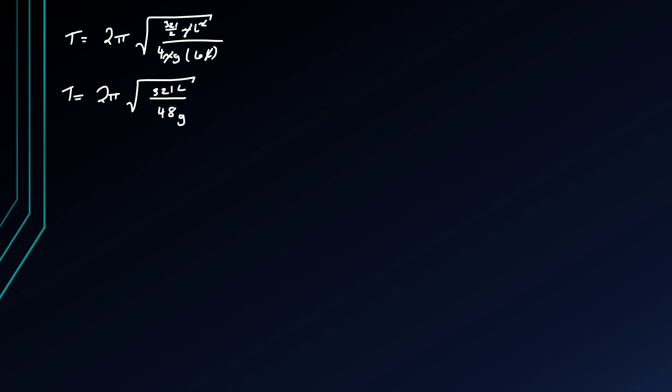Which we can, I think 321 is divisible by 3 it seems. Yep, and so that means that T is 2 pi root 107l over 16g seconds. So we finally found the answer to part one, let's find the answer to part two next.